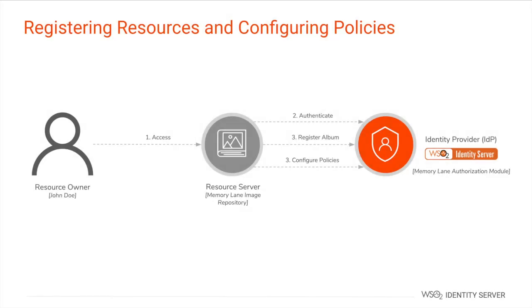Let's look at a sample scenario in detail to get a clearer understanding. Let's extend our example where John Doe wants third parties to gain controlled access to his photographs. First, John Doe, the resource owner, should access the resource server and get authenticated. In this scenario, the resource server is the Memory Lane application that stores John's photos. Memory Lane will use WSO2 Identity Server, which acts as the authorization server, to authenticate the user. Once authenticated, John Doe will register a photo album and configure access control policies that will be applicable to parties willing to access the photo album.